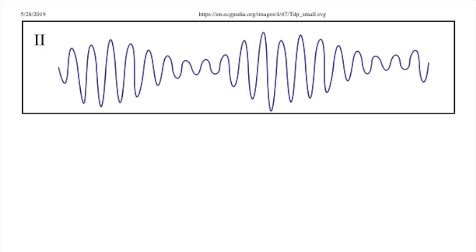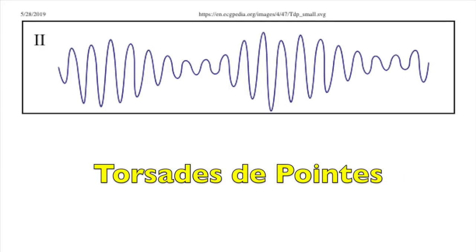This is torsades de pointes, and the treatment for this is usually just IV magnesium because the most common cause of this rhythm is hypomagnesemia.